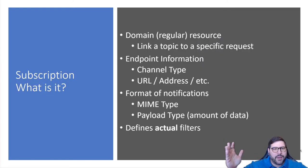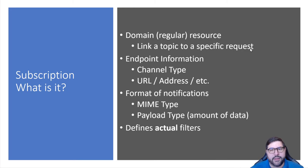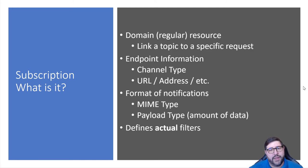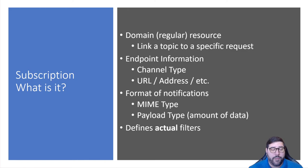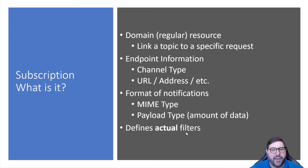Now that we have a topic, we need a subscription. This is a domain resource representing something — it's just a way to link a topic to a client. We need endpoint information: are you getting these via REST, via WebSockets? What's the URL I'm sending notifications to? What MIME type — FHIR XML, FHIR JSON? What kind of payload — full resources, ID-only? And then what are the actual filters? Instead of saying you can filter based on patient, this says give me patient 123.